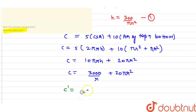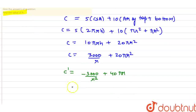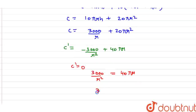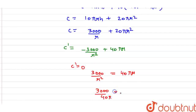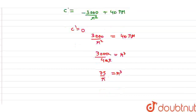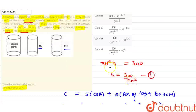We need to minimize this function, so we take the derivative. C' = -3000/r² + 40πr. Setting C' = 0, we get 3000/r² = 40πr, which gives 3000/(40π) = r³. Simplifying, 75/π = r³, so r = (75/π)^(1/3).